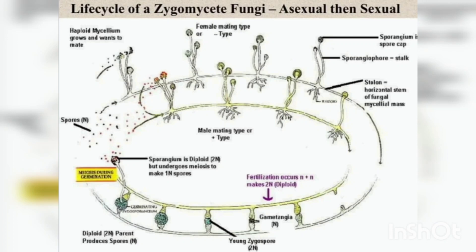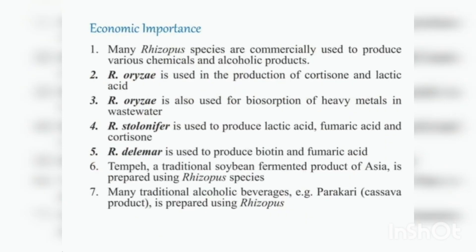Both sexual and asexual reproduction are shown in the life cycle. Rhizopus is not only harmful — it also has many commercial purposes. Rhizopus oryzae is used in the production of cortisone and lactic acid, and for bioabsorption of heavy metals. Rhizopus tolerifer is also used to produce lactic acid, fumaric acid, and cortisone. Rhizopus delemar is used to produce biotin and fumaric acid. There are many commercial uses. Hope you understood this section — if you have any doubts, please feel free to ask.